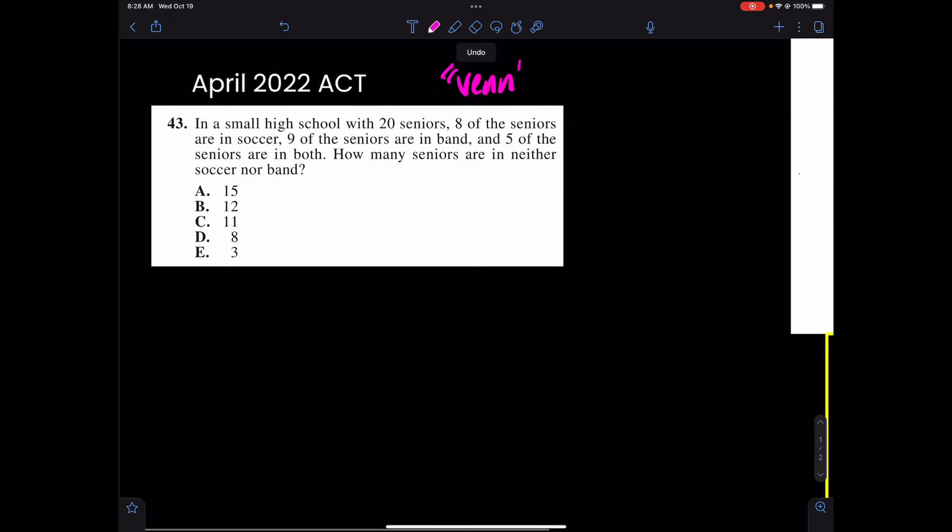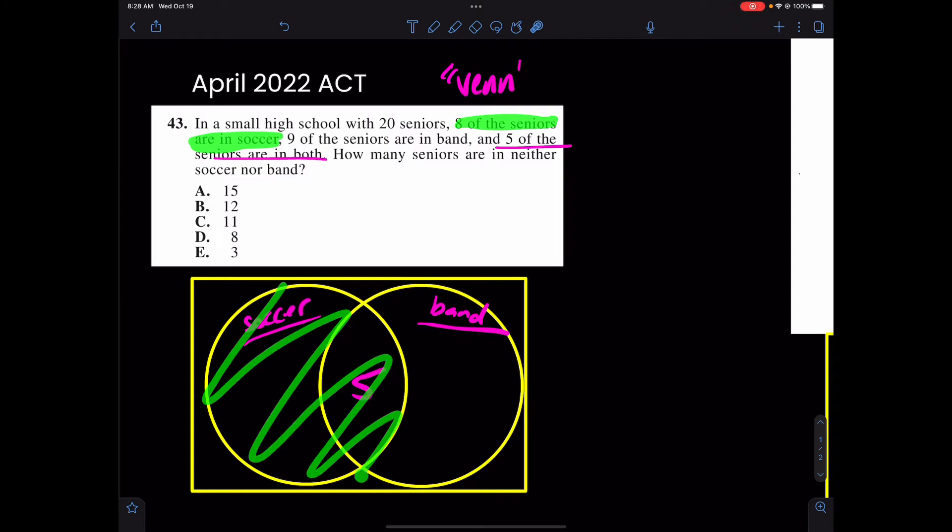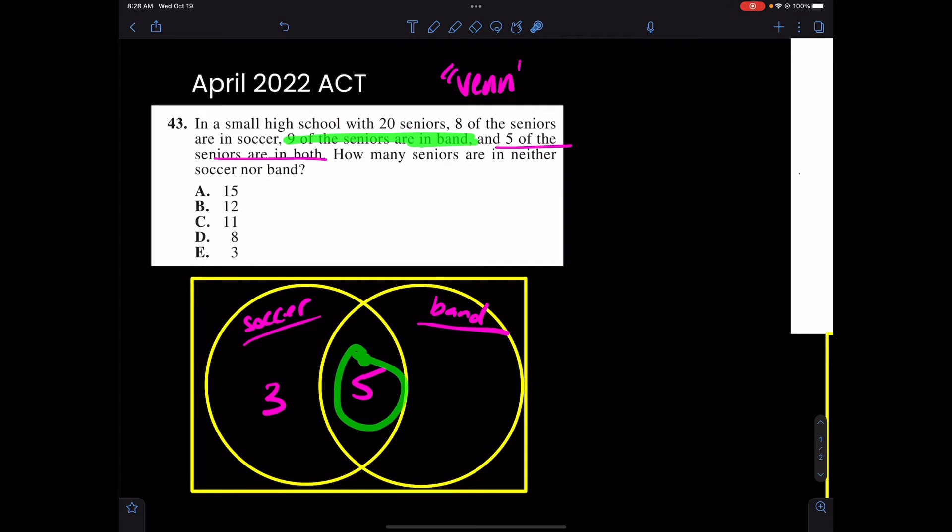So let's come up with it. So we have soccer here, perhaps, and band here. The best place to start is probably in the middle. It says five seniors are in both. So five seniors are in both. It says that eight of the seniors are in soccer totally. Again, eight of the seniors are in soccer. So eight will fill in this. But wait a second. If five are already here and eight should be in the total, shouldn't this be three? Three and five make eight. Now take a look at band. There are nine seniors in band, but five of them are in the middle already. How many should be just in band? I would argue four.